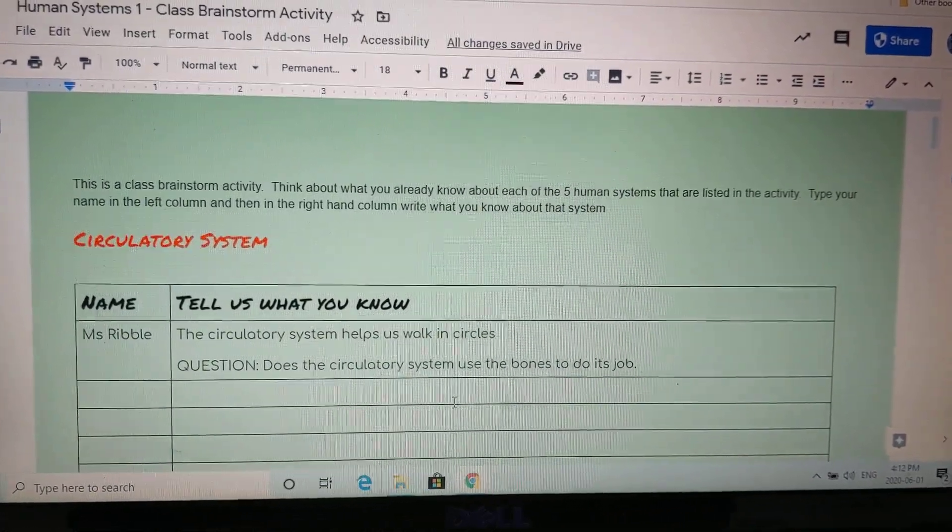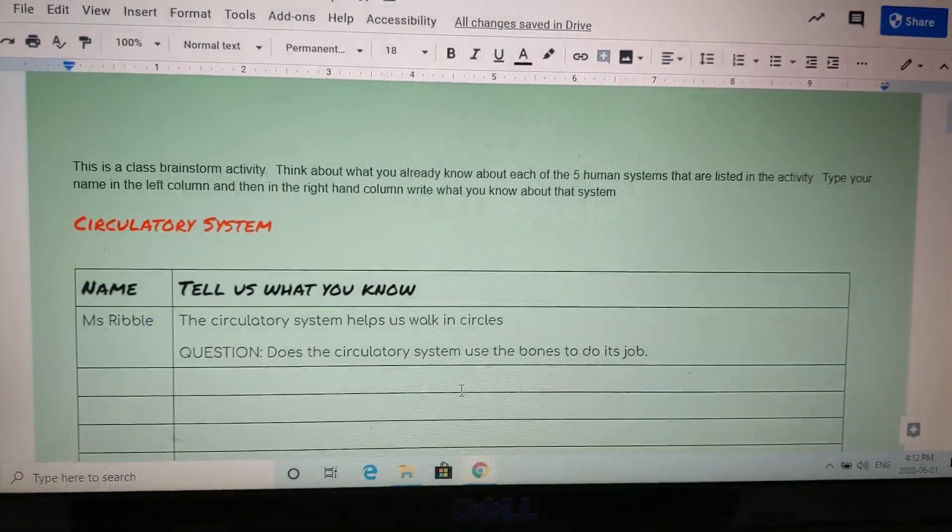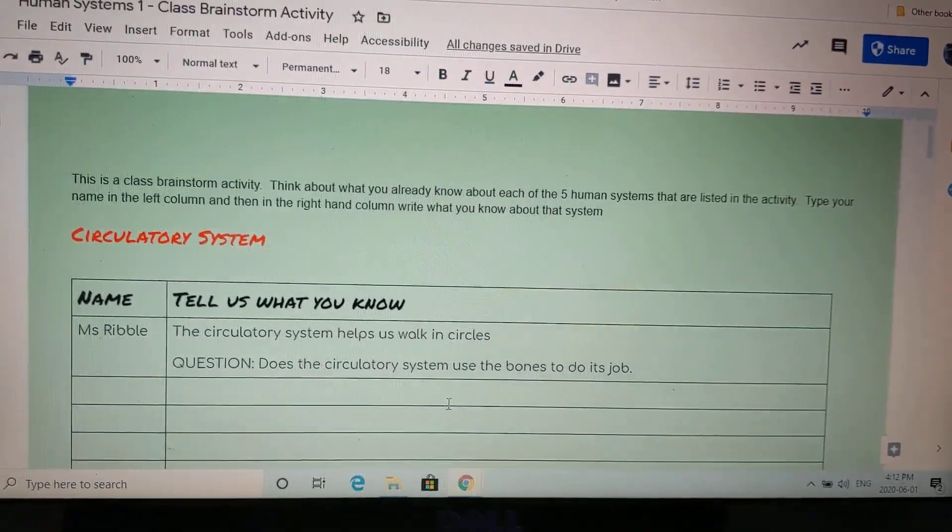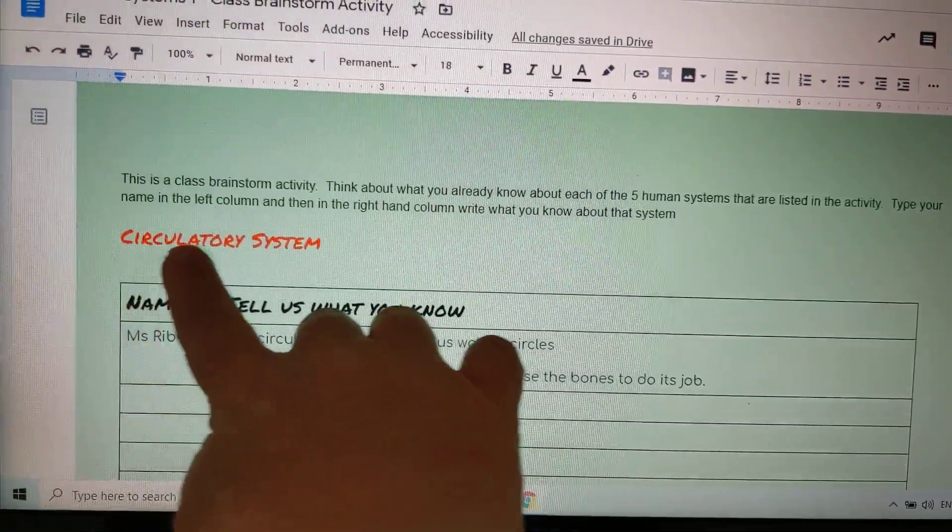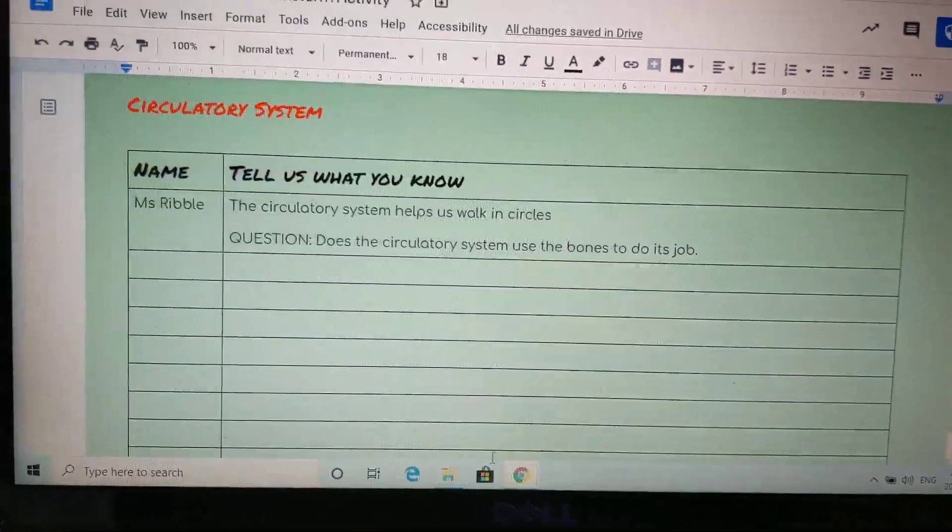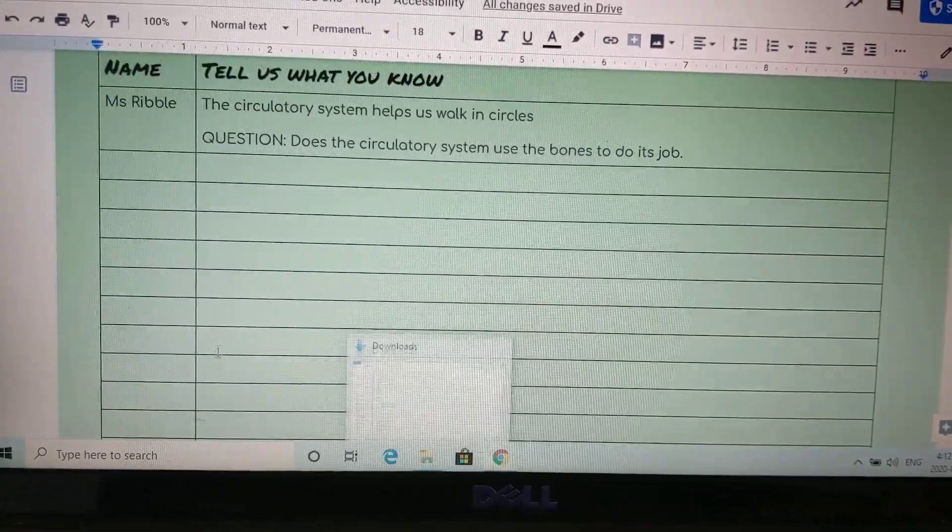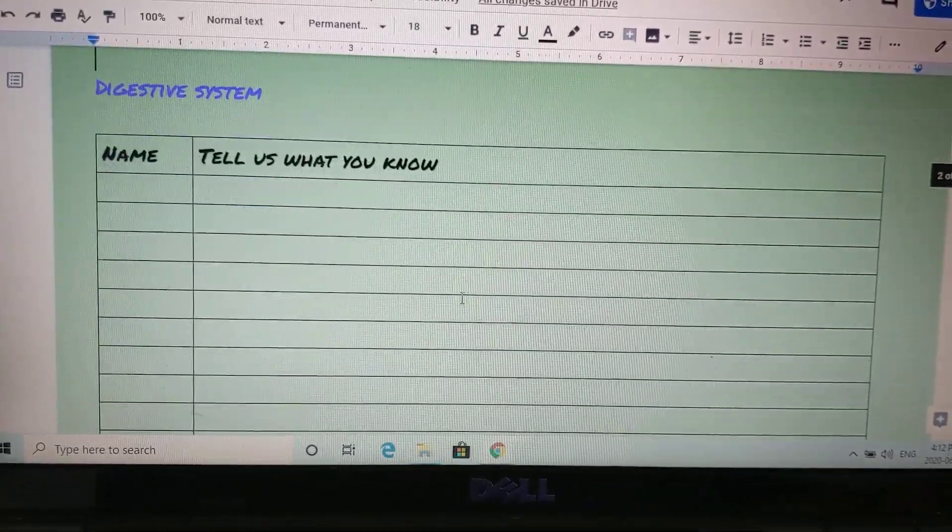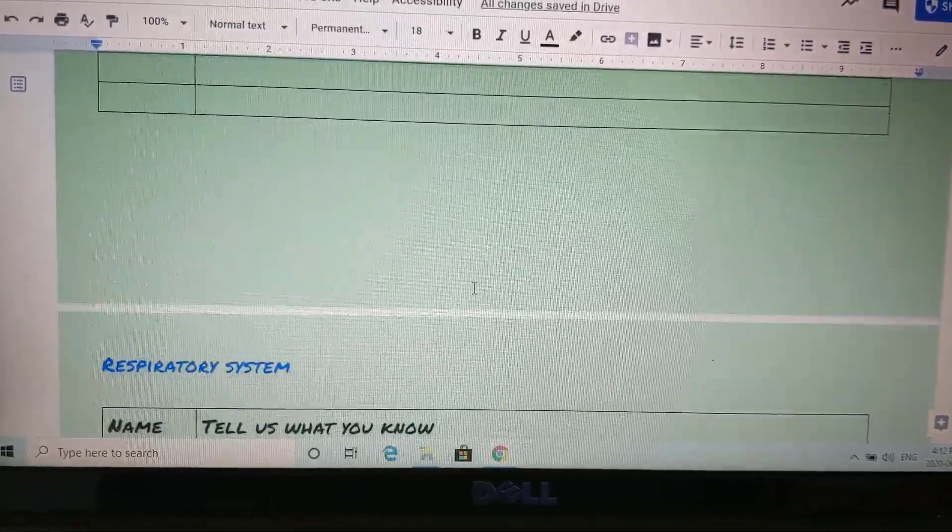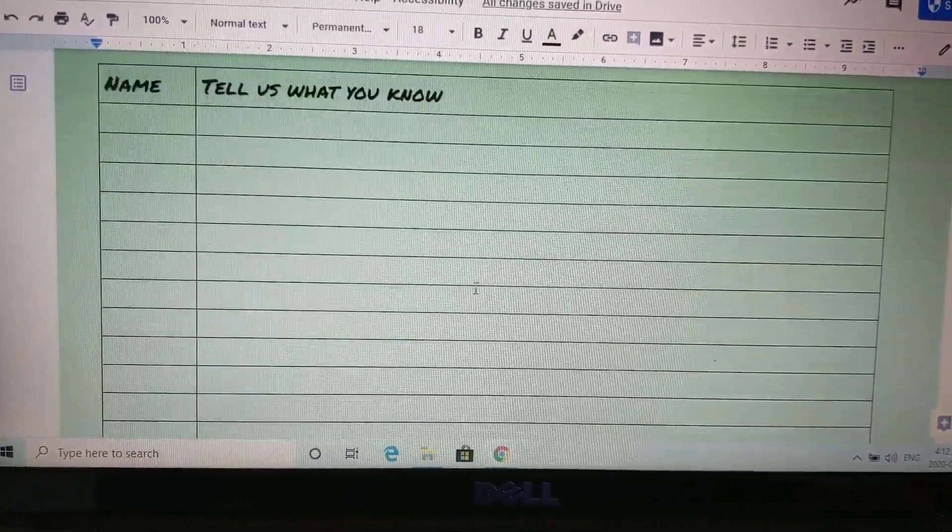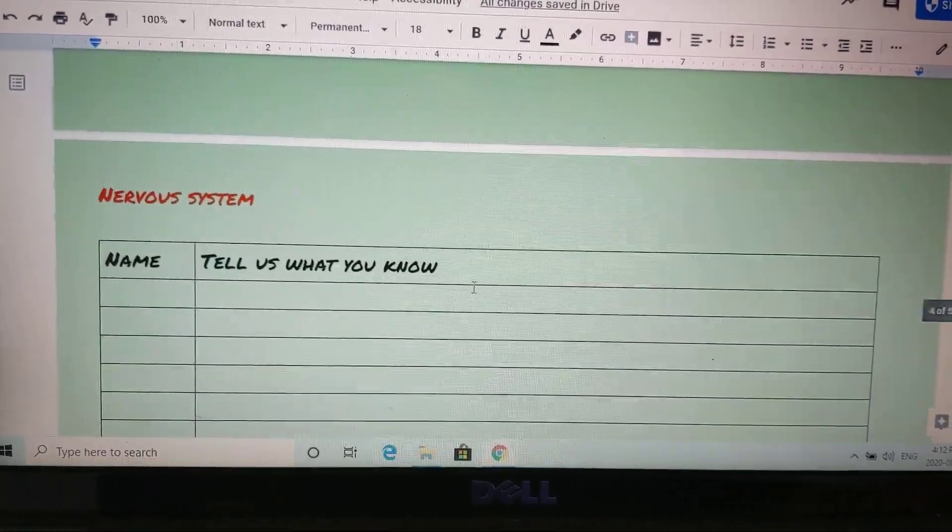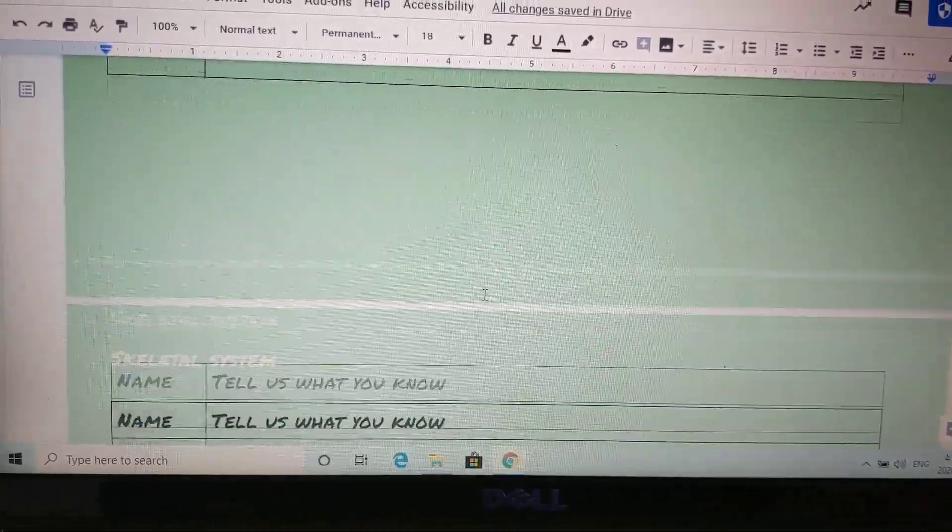Okay kids, this is our document that we're going to be working on. As you can see, we have a chart in each one of the systems. We have the circulatory system, we're going to do five systems for this activity. We have the digestive system, we have the respiratory system.